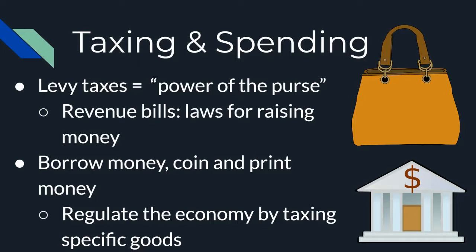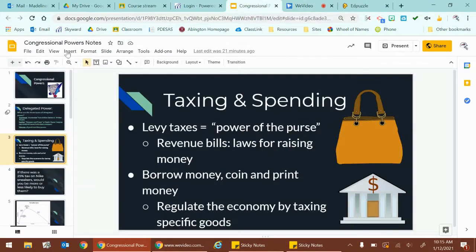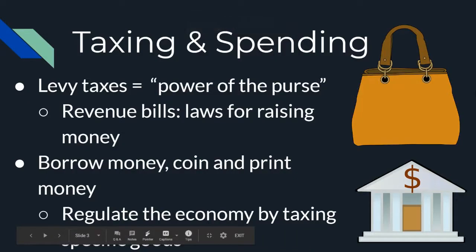Congress also has the power to borrow money — taking money from different entities such as other countries. Congress can also control the coining and printing of money. This coining and printing of money is called our currency power — the power to control currency both by how it is coined and printed, but also its distribution and laws about its use.